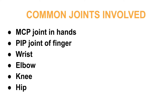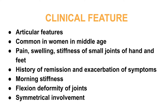Rheumatoid arthritis involves some common joints like the MCP joint in the hands, PIP joint of the fingers, fist, elbow, knee, and hip. The articular features are common in women in middle age, presenting with pain, swelling, and stiffness of small joints.